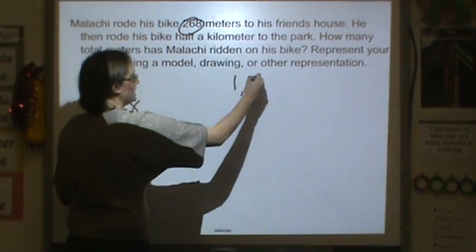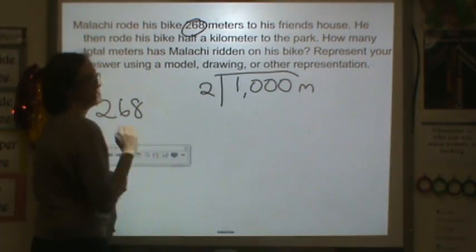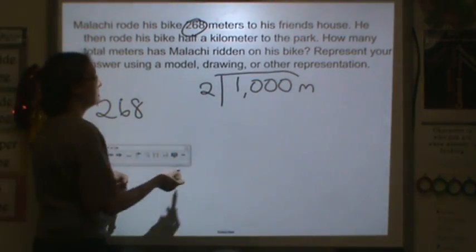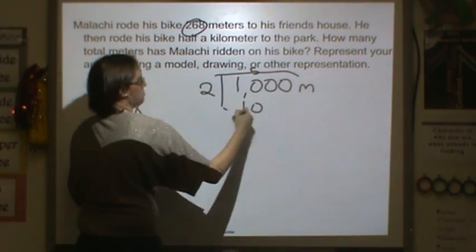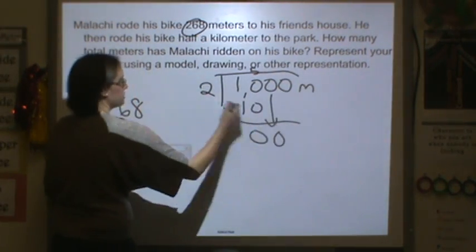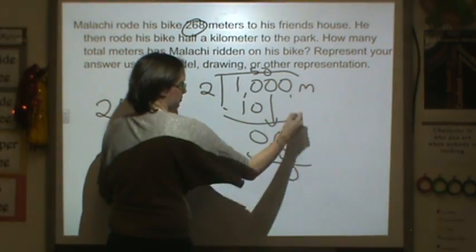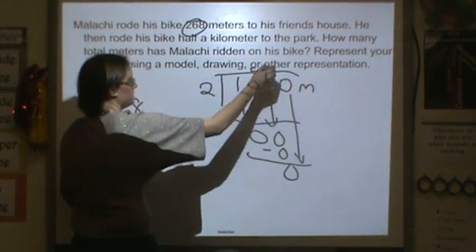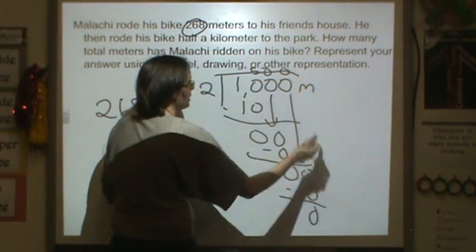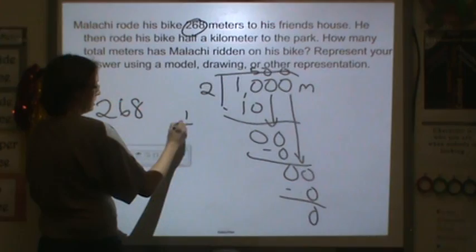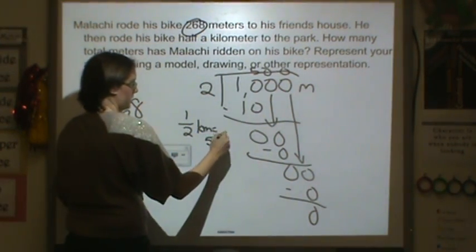One kilometer is 1,000 meters, right? So you're going to divide by two to get a half, because fractions are really division. How many twos are in ten? Five. Multiply, subtract, bring down. How many twos are in zero? Zero. Multiply, subtract, bring down. How many twos are in zero? Zero. Multiply, subtract. So half a kilometer is equal to 500 meters.